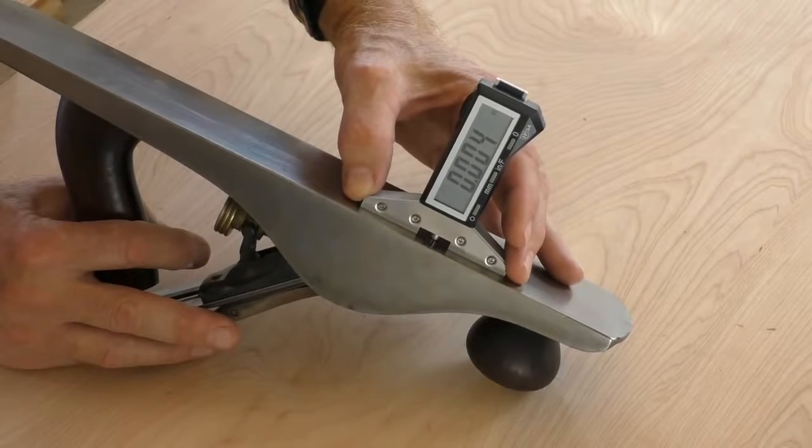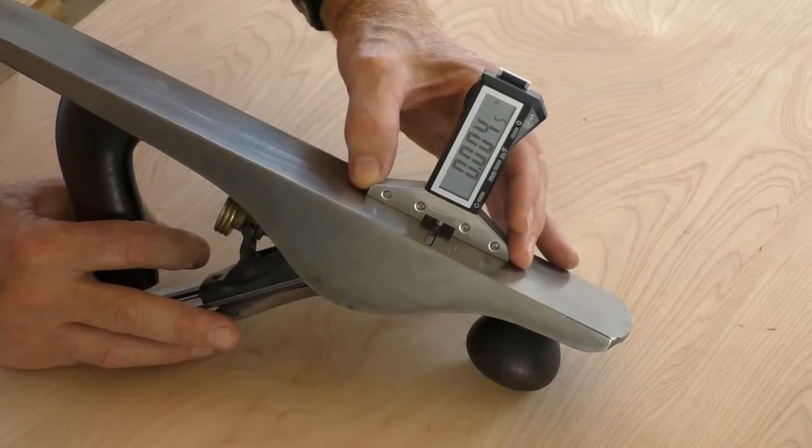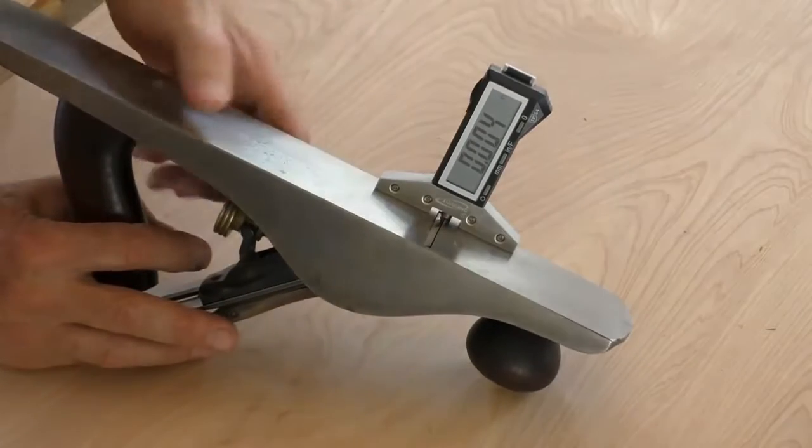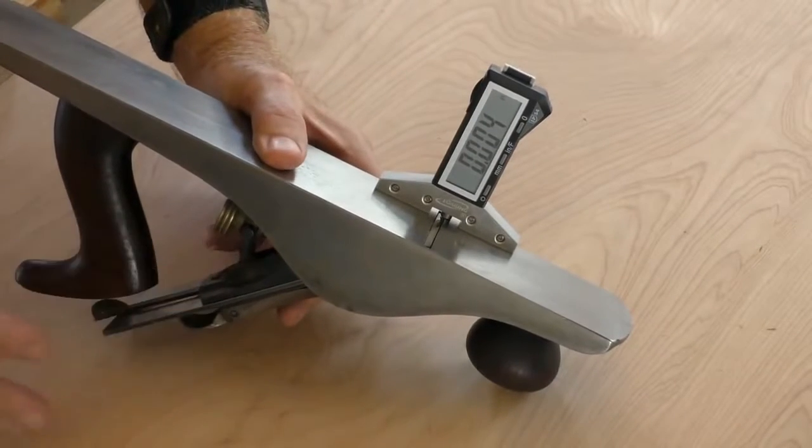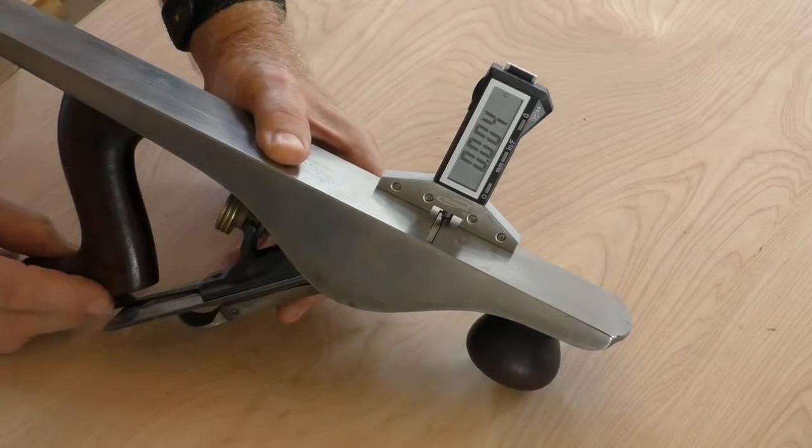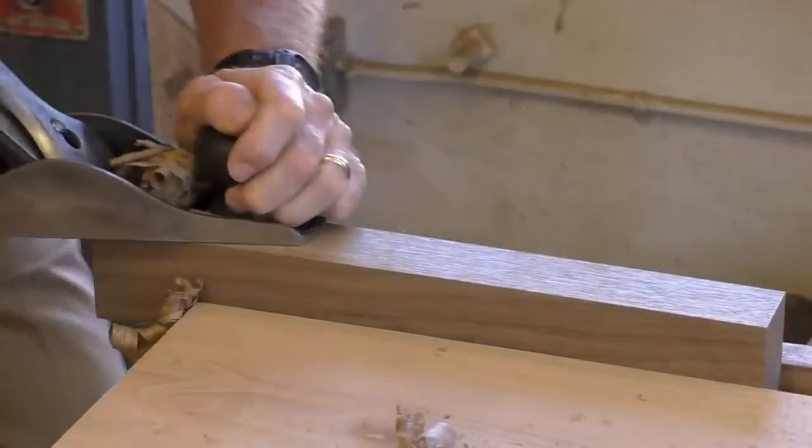Now make lateral adjustments so the iron is coplanar to the sole. Set PlaneCheck to one side of the iron and adjust as needed. Repeat on the other side and you're done! Now it's time to make that perfect shaving.